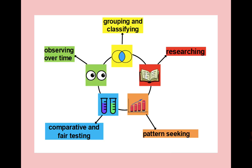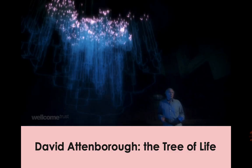Hopefully you got them. You've got observing over time, grouping and classifying, researching, pattern seeking, and comparative and fair testing. It's always important to have those in your mind. We're going to be looking specifically today at classifying and observing over time as the main areas. But obviously, when we're studying any scientific topic, we are always considering all of those skills in what we're doing.